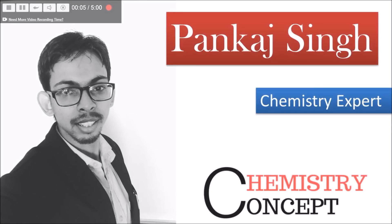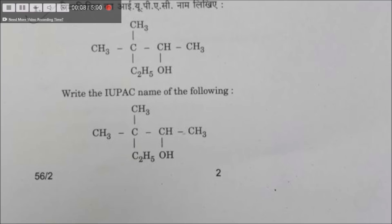Welcome students, this is Pankaj Singh and now we are going to solve the chemistry paper of 2018. We'll have a look at a few questions. We have a compound: carbon 1, carbon 2, carbon 3, carbon 4, and a fifth carbon, and the name is 3,3-dimethylpentane.